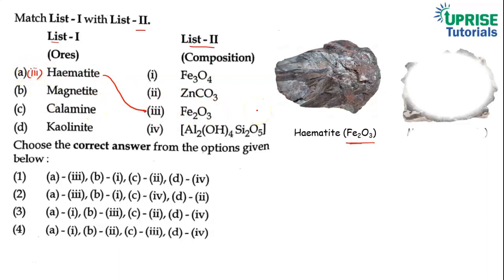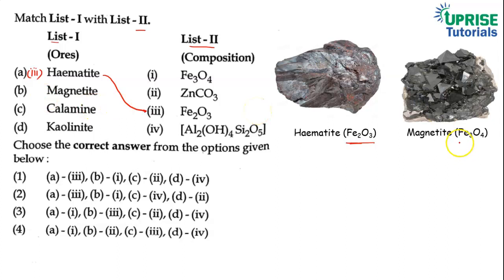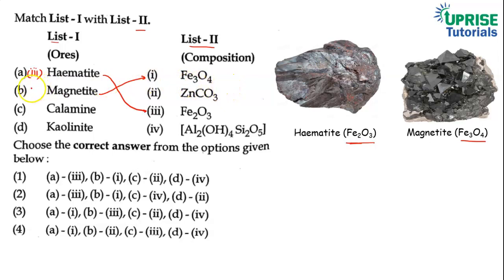Next hai magnetite. Magnetite ka formula hota hai Fe3O4. Yah bhi iron ka hi ore hota hai. To yahaan magnetite jo hoga, vah Fe3O4 se match karega. Means B wala jo hoga, vah composition first se match karega.